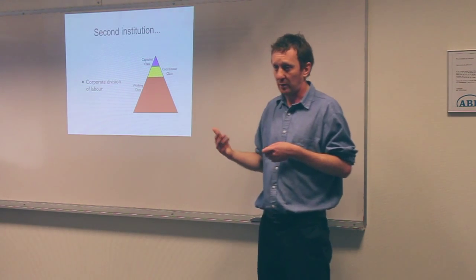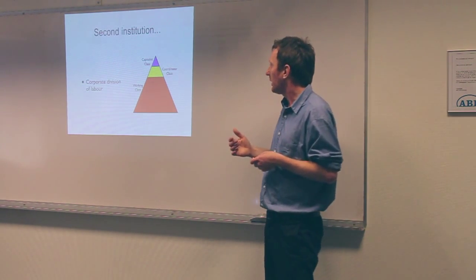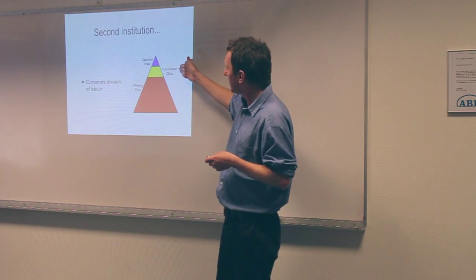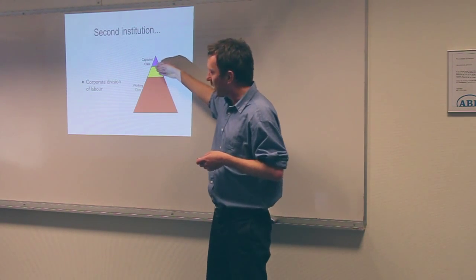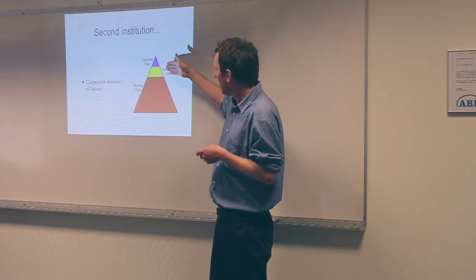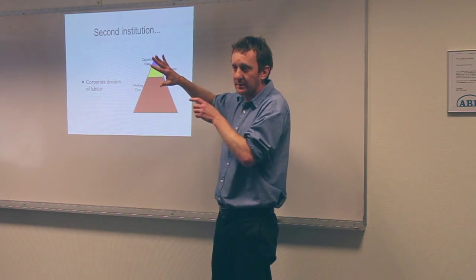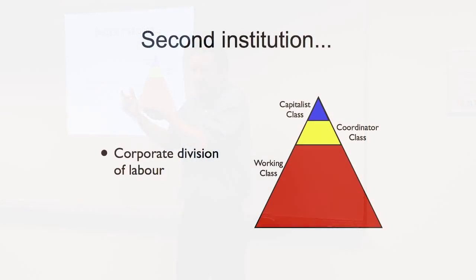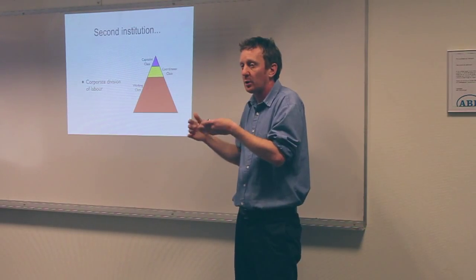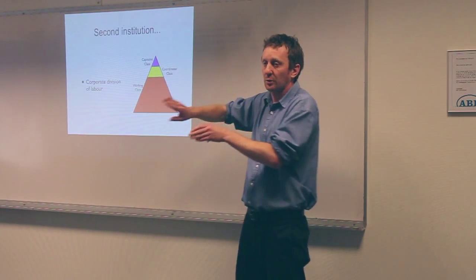The corporate division of labour gives rise to a second class we call the coordinator class. They monopolise all the yellow tasks — the empowering and desirable tasks within the economy — while the working class do all the red tasks, which are the disempowering and less desirable tasks. So if you want a classless economy, the corporate division of labour has also got to go.